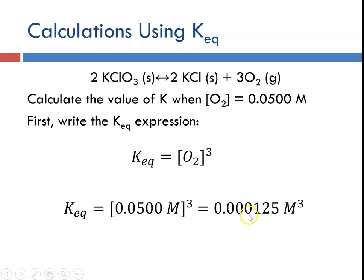So Keq in this case is equal to 0.000125 molarity cubed or 1.25 times 10 to the minus 4 molarity cubed. Now the Keq is much less than 1 therefore the right side of this reaction which would be the reactants, reactant is favored.